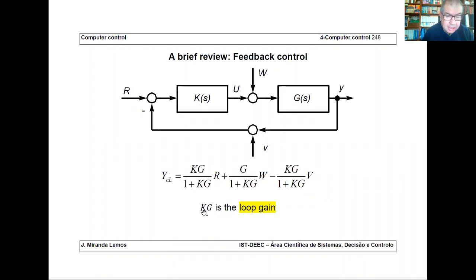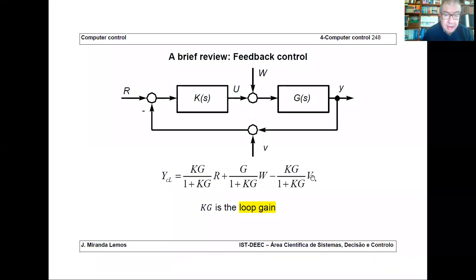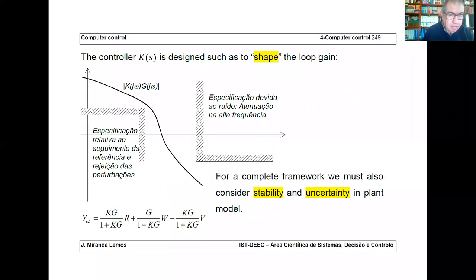Remember that I call KG the loop gain. If you want y to track r, KG must be very big so that this is approximately one. If KG is very big, you are attenuating w, but you are also tracking the noise. So as I said, the noise can only act in the high frequency. If you have a bad sensor, the system won't work.